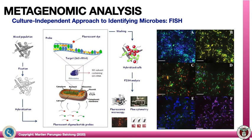Although FISH was initially limited to the 16S rRNA marker gene and thus to diversity studies, it has since been expanded to functional gene probes that can be used to identify specific enzymes in communities. But generally, it remains a primarily low-throughput, imaging-based technology. Here is an example of samples analyzed using FISH — you get your mixed population, fix them, hybridize with a fluorescent probe, then observe under a fluorescent microscope. The various colors represent various metabolic groups or genera.